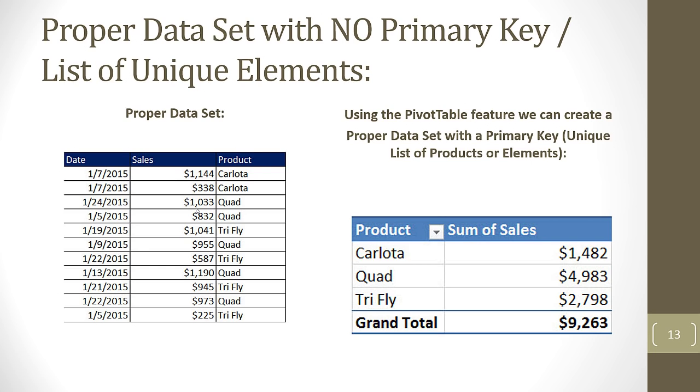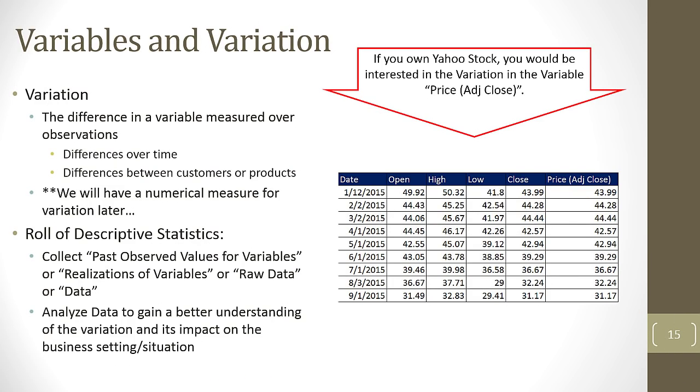I want to go two slides ahead to slide 15 and talk about variation. Variation in our prerequisite class Business 210, we talked about all sorts of cool calculations like variation, standard deviation, interquartile range. But variation is very important. It's the difference in the variable measured over observations. These are observations or records. It could be a difference over time, like this data set right here. We are really interested in our Yahoo adjusted close price and how it's changing over time. We're interested in the variation. Probably if we're owning a stock we would like it to go up consistently over time. But oftentimes that's not the case. So we'll learn later how to measure this variation.